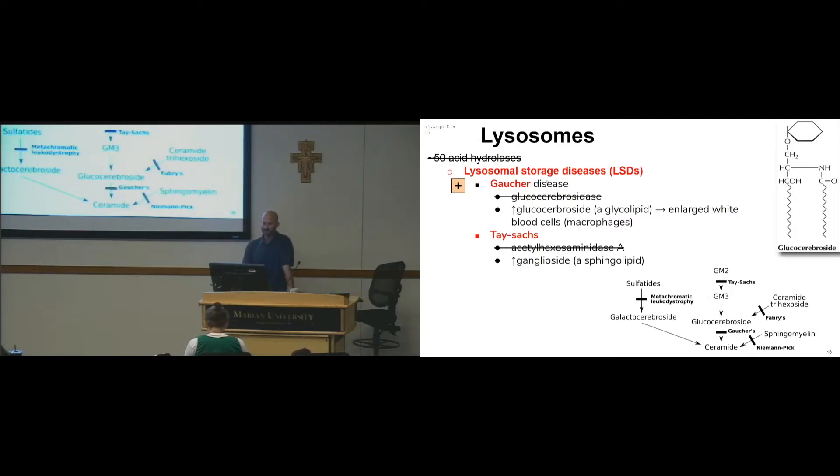So, some lysosomal storage diseases. Gaucher disease: you're not having glucocerebrosidase, which is breaking down this, so you end up with glucocerebroside, which is a glycolipid, and you get enlarged blood cells, white blood cells, macrophages.